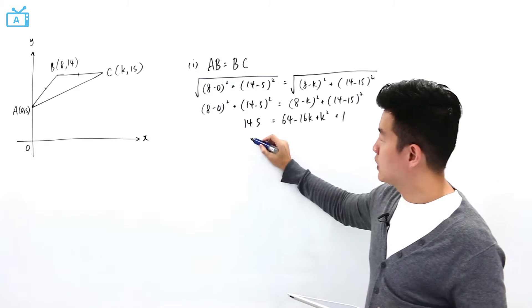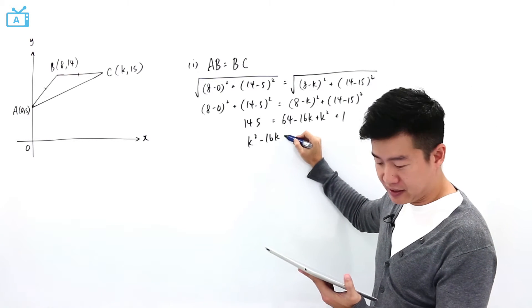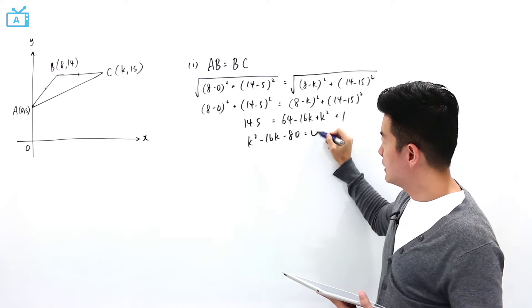If I were to shift everything over to one side, I have k square minus 16k minus 80. This is equal to 0.